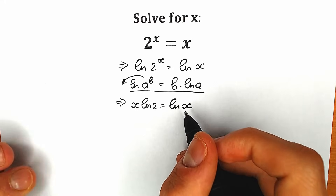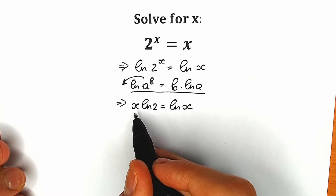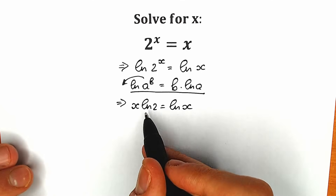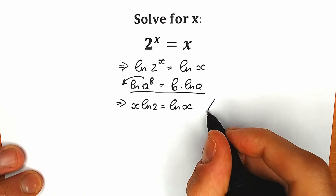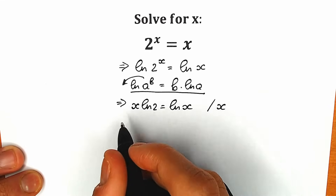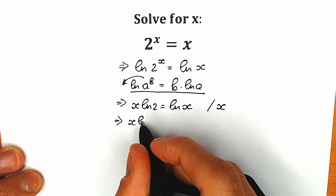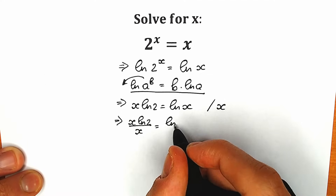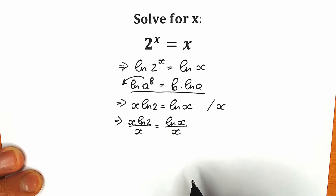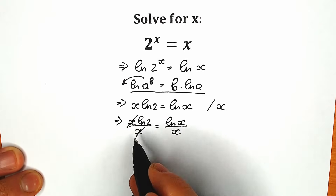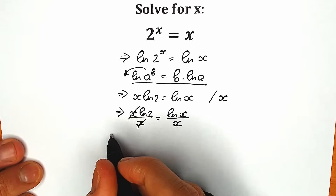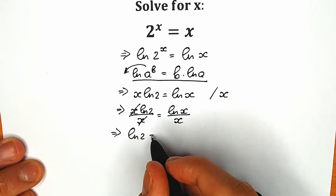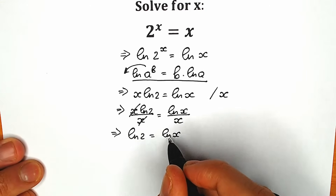What are we going to do next? Let's divide both sides by x to group our variables. So we have x times natural log 2 over x equal to natural log x over x. After cancelling x on the left side, we have natural log 2 equal to natural log x over x.